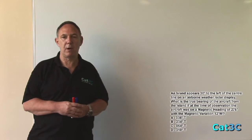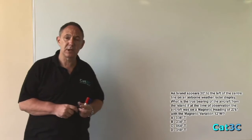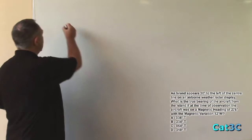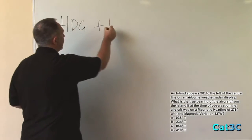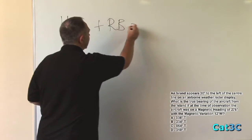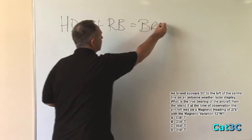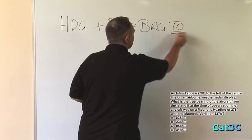In order to calculate a true bearing from the island to the aircraft, the first thing we have to do is to calculate the true bearing from the aircraft to the island. In order to do this, we use a very simple formula: heading plus relative bearing equals bearing to.